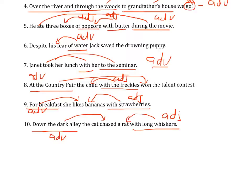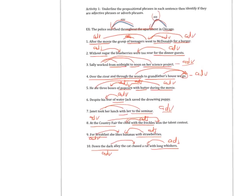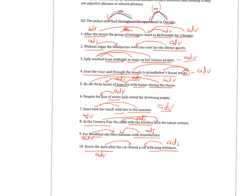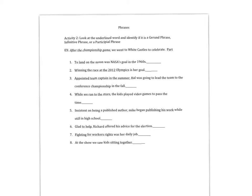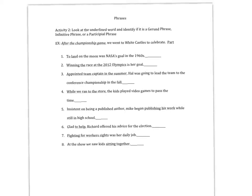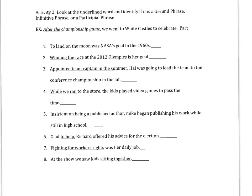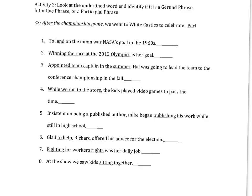All right, how did you do? I'm going to zoom back out so you can see. Go ahead and pause it if you need to look a little longer. I'm going to switch to the next slide. Here's the second part of the sheet — phrases. We are looking at the underlined word and identifying if it's a gerund phrase, infinitive phrase, or a participle phrase.